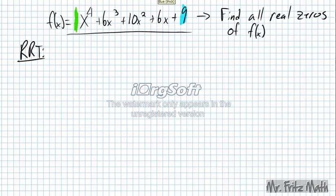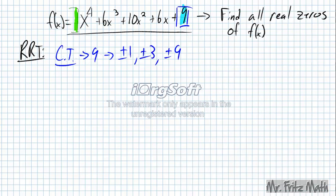So let's start off with my constant term. The constant term is 9, so my factors will be plus or minus 1, plus or minus 3, and plus or minus 9. My leading coefficient is 1. All the factors of 1 are just plus or minus 1.